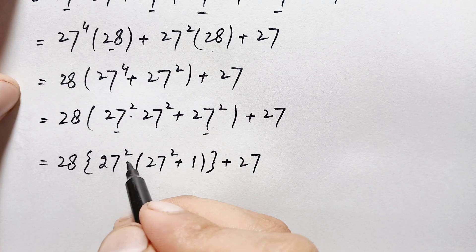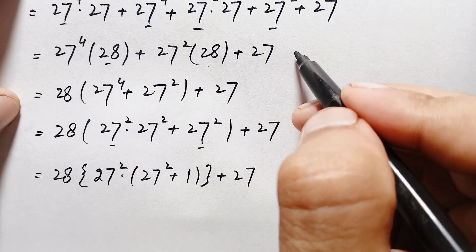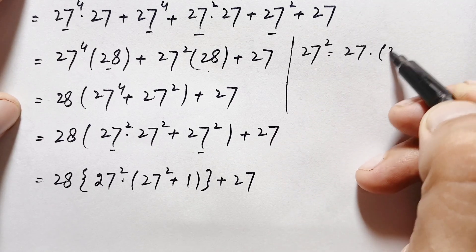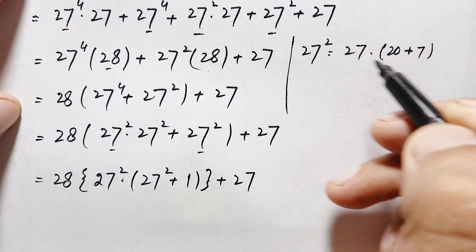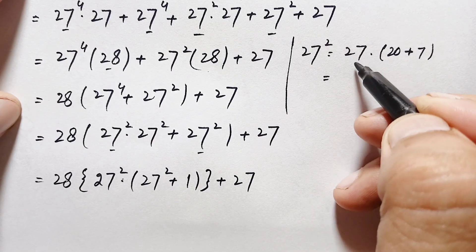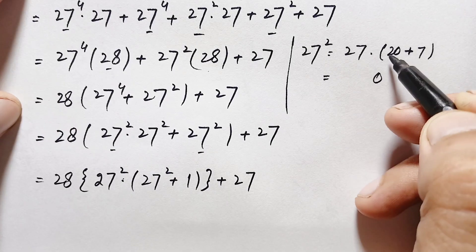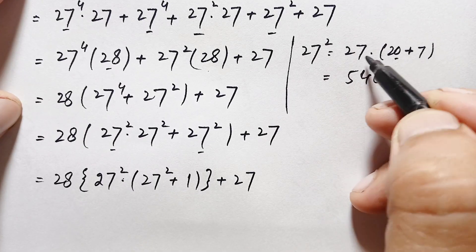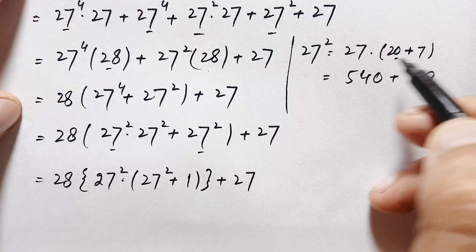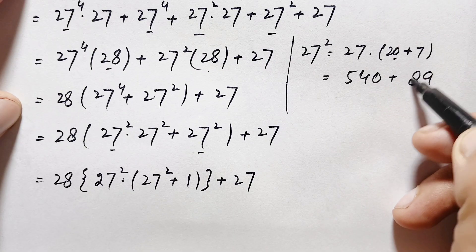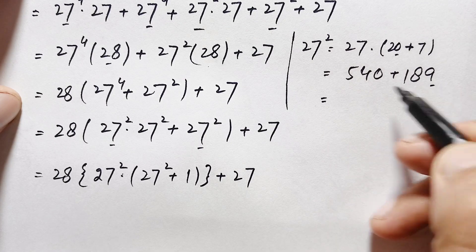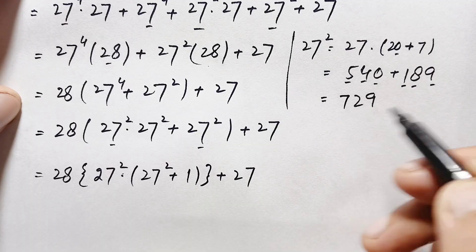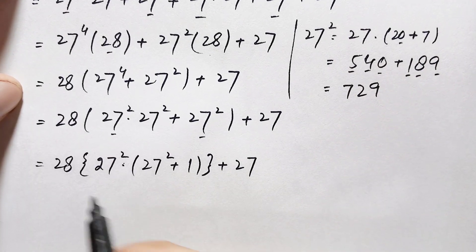Now we find the value of 27 squared without a calculator. We write 27 squared as 27 times 27, and express 27 as 20 plus 7. Multiplying 27 by 20 gives 540, and multiplying 27 by 7: 7 times 7 is 49, carry 4; 7 times 2 is 14 plus 4 is 18, giving 189. Adding 540 plus 189 gives 729.